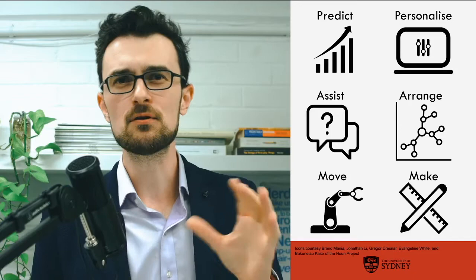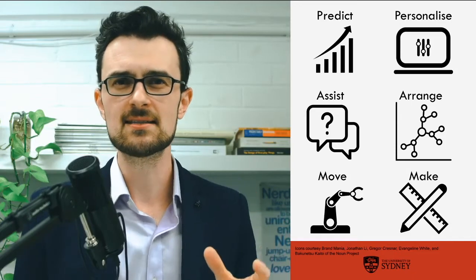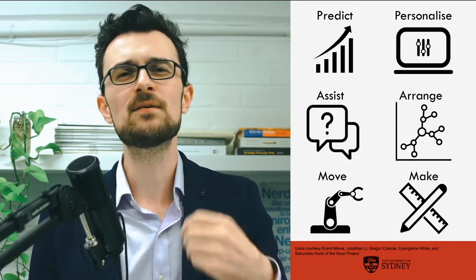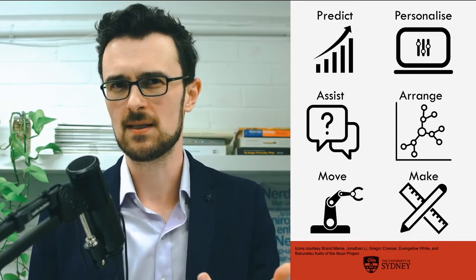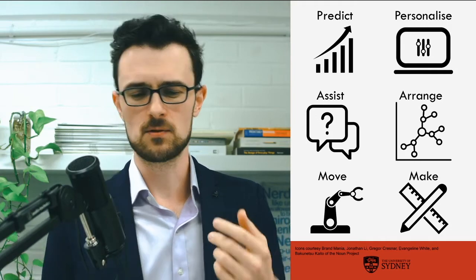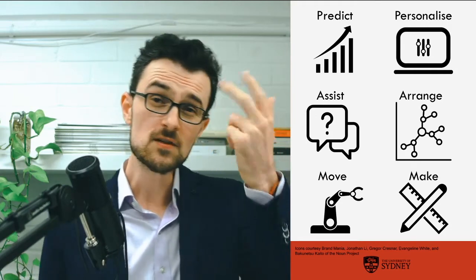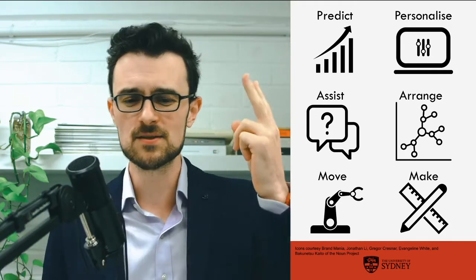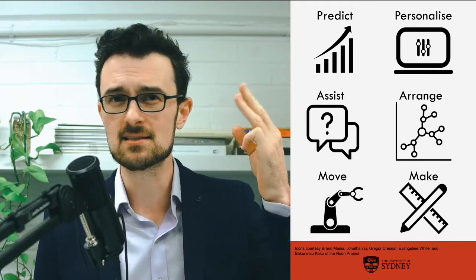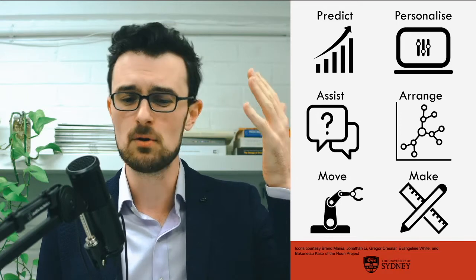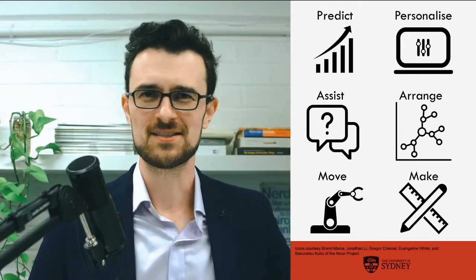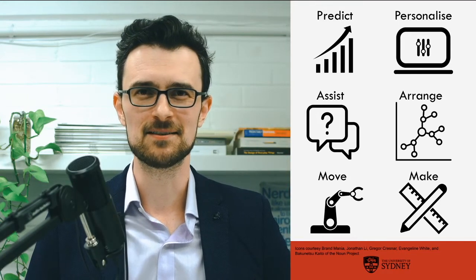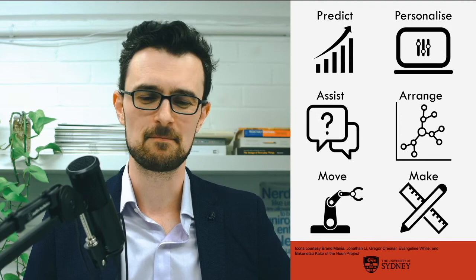I'm going to give you an example for each of these and hopefully help you understand what are some of the strengths and weaknesses of each of these approaches. The six are: predict, personalize, assist, arrange, move, and make — with some dramatic license taken to make the letters line up.